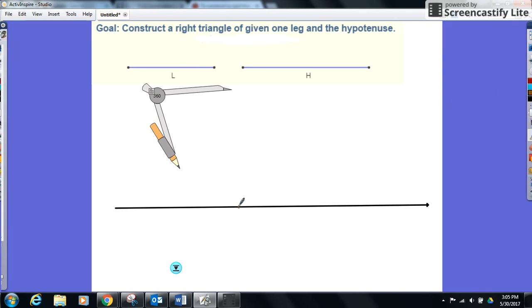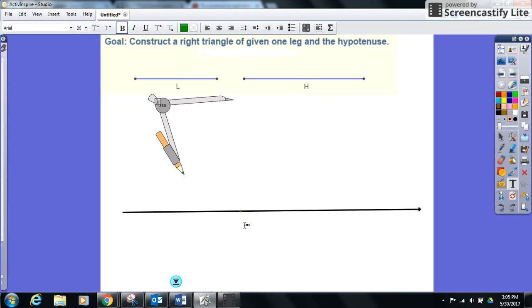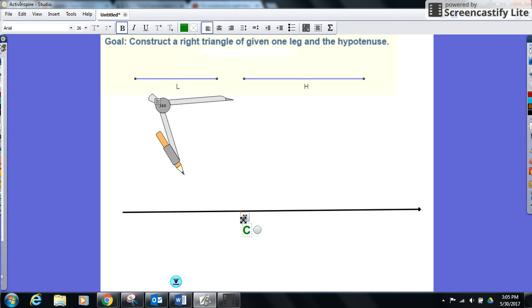And we'll give it a name, point C. Now we're going to go up and measure the leg we need on our right triangle. We're going to open up our compass to the width of L, which will be our leg.